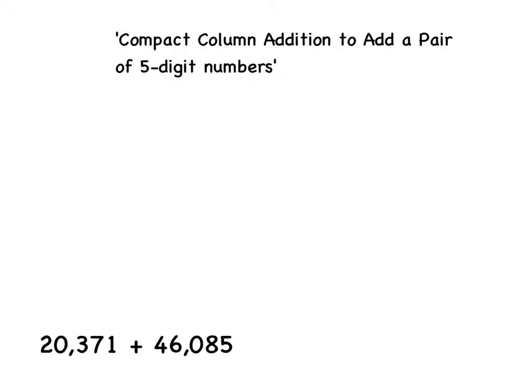This video will show you how to use Compact Column Addition to add a pair of 5 digit numbers. On the screen you can see two 5 digit numbers: 20,371 and 46,085.